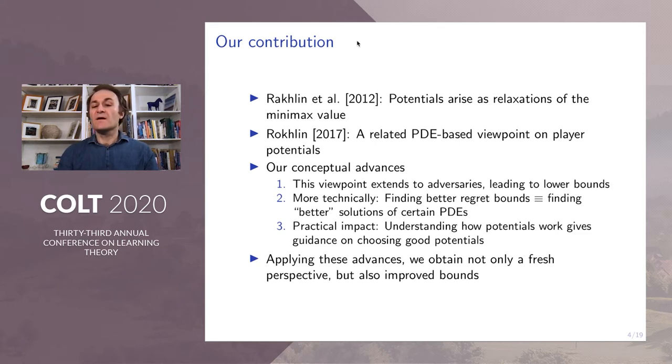leading to lower bounds. More technically, finding better regret bounds is equivalent to finding better solutions of certain PDEs. The practical impact is understanding how potentials work as guidance for choosing good potentials. Applying these advances we obtain not only a fresh perspective, but also improved bounds.